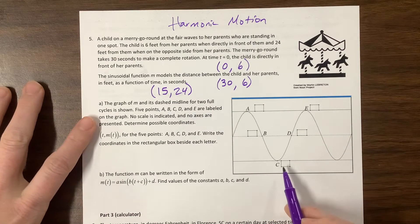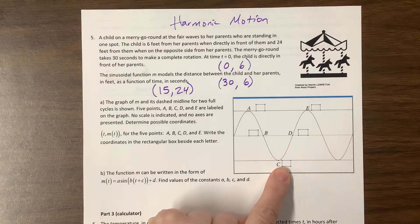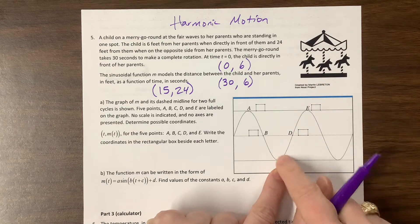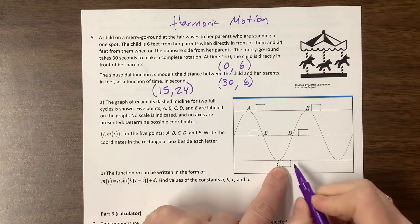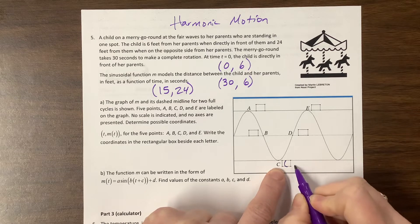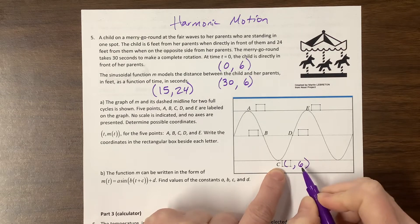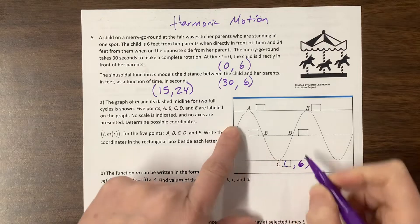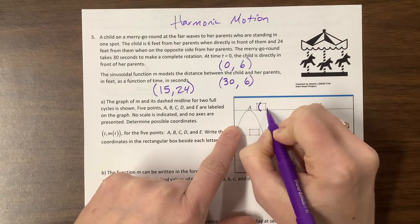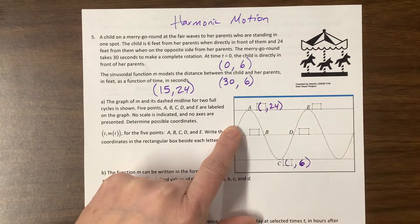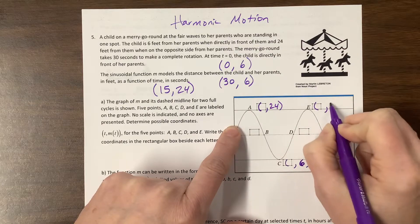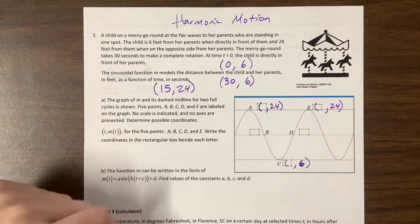The graph of m and its dashed midline for two full cycles is shown. Find points A, B, C, and D. No scales indicated, no axes are determined possible coordinates. So what I know here is that she is as close, I would say this here at the bottom is as close as she'll ever get. So this definitely has a y-coordinate of something x comma, our y-value is 6, because that's as close as she'll ever get. This is something comma 24, because that's as far as she'll ever get.